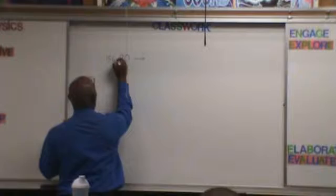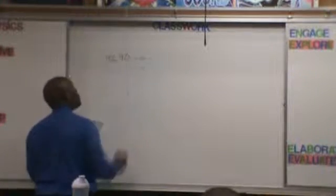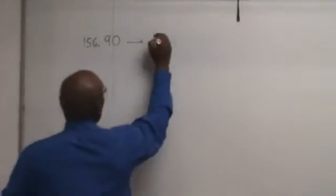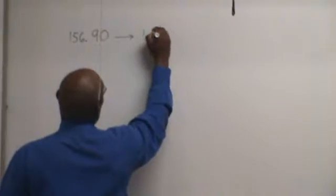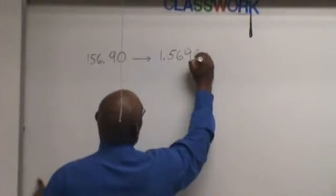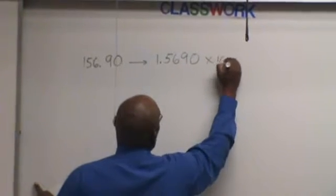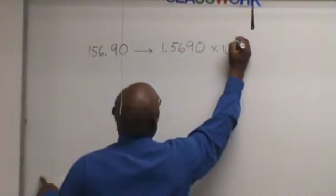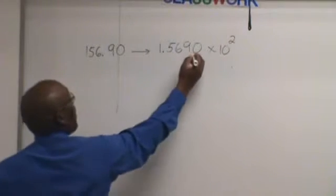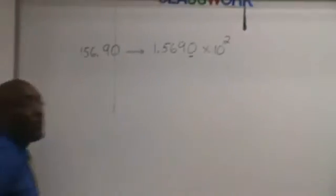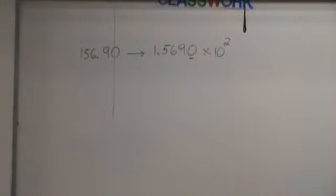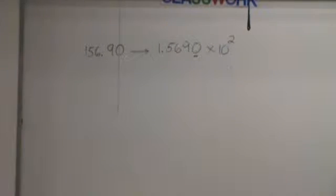What is this inside the peak notation? One point five six nine zero. How many of you kept it? How many of you dropped that zero? When you dropped that zero, you are wrong.